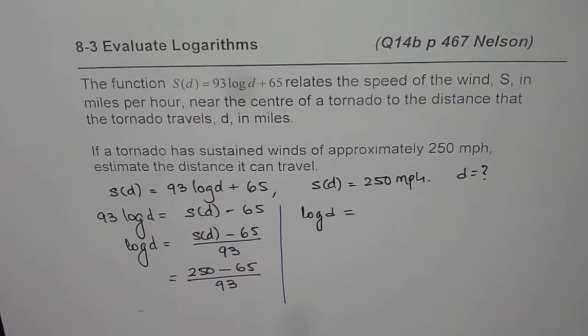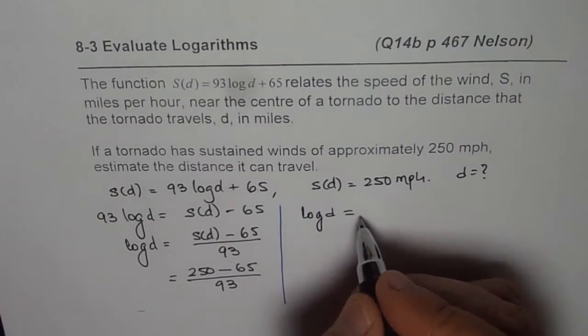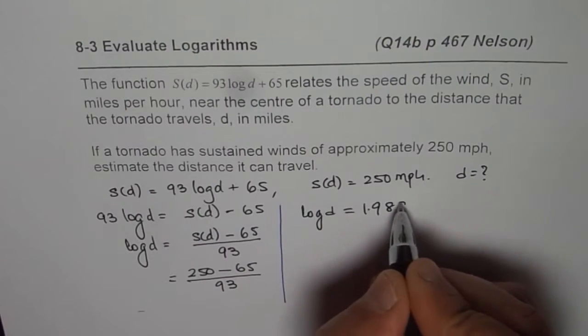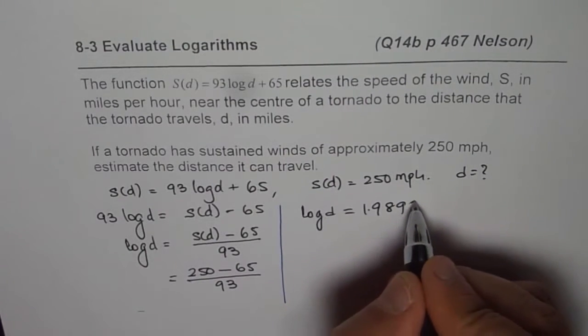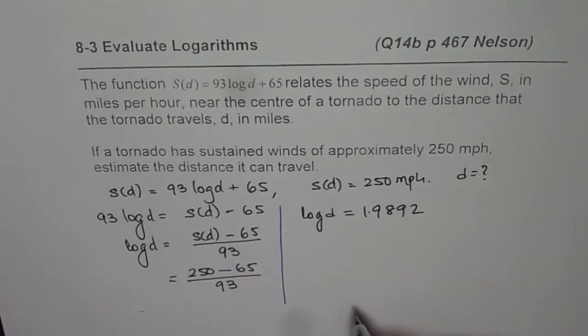1.989. Let me write 1.9892. Okay, let's take it to 4 decimal places.